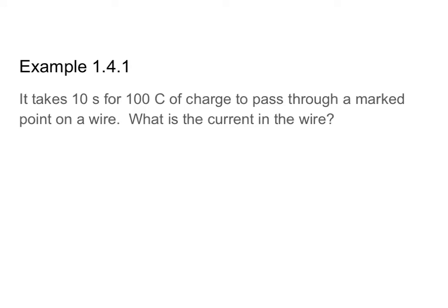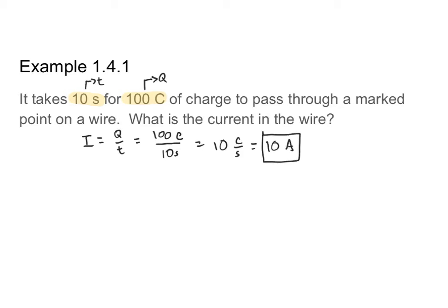Let's work through a problem. It takes 10 seconds for 100 coulombs of charge to pass through a marked point on a wire — find the current. I know that i equals q over t. From the problem, t equals 10 seconds and q equals 100 coulombs. So i equals 100 coulombs over 10 seconds, which is 10 coulombs per second, or in SI units, 10 amperes. The current on the wire is 10 amps.